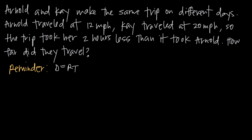To solve a uniform motion problem, the first thing we want to remember is that we're going to be using this equation for distance, which tells us that distance is equal to rate times time. If I multiply together the rate that I travel and the amount of time I travel, then I'm going to get the amount of distance that I travel. This is the formula that we're going to use.